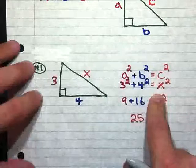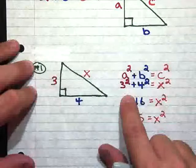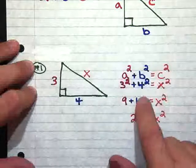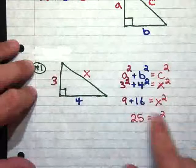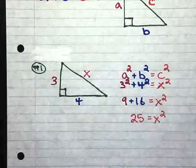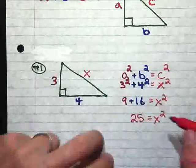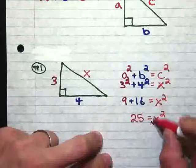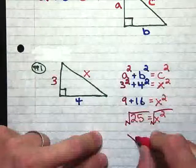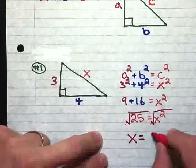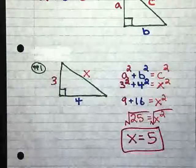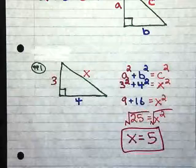So we have 3 squared plus 4 squared equals X squared. Then we simplify everything. So we get 3 squared, which is 9, plus 4 squared, which is 16, equals X squared. And when we add 9 and 16, we get 25 equals X squared. And then in order to get rid of our exponent here, we have to square root each side. And when we do that, we end up with X equals the square root of 25, which is 5. And that gives us the answer for X. And this is the Pythagorean Theorem in a nutshell as a review.